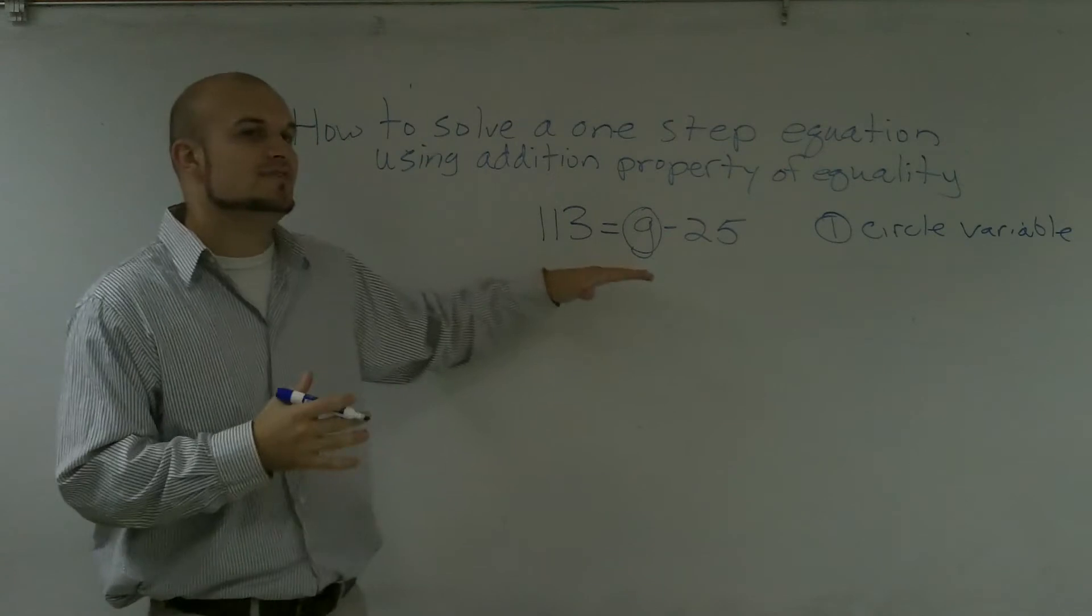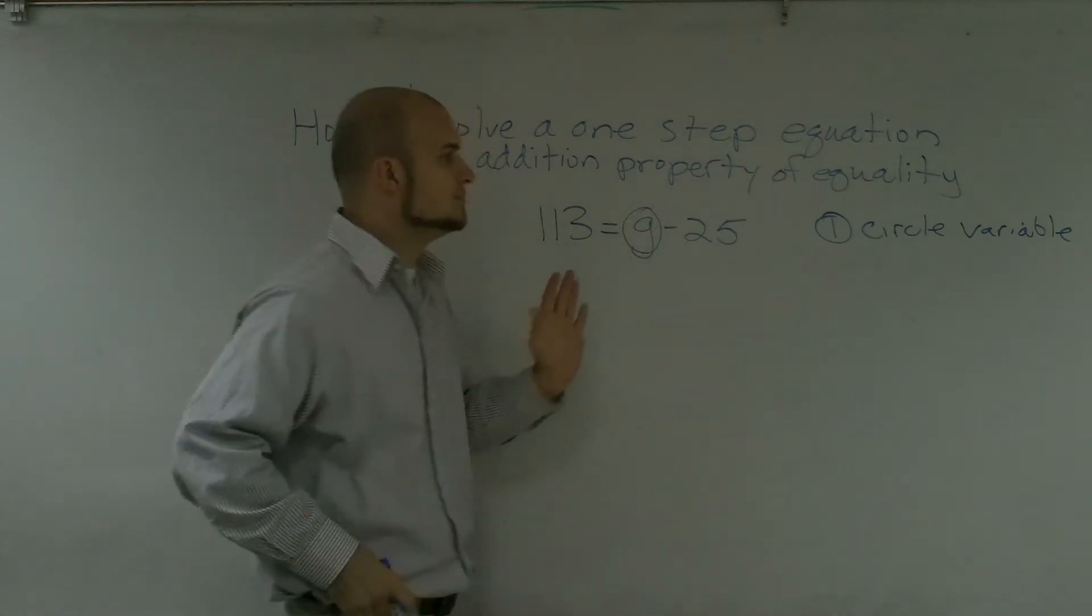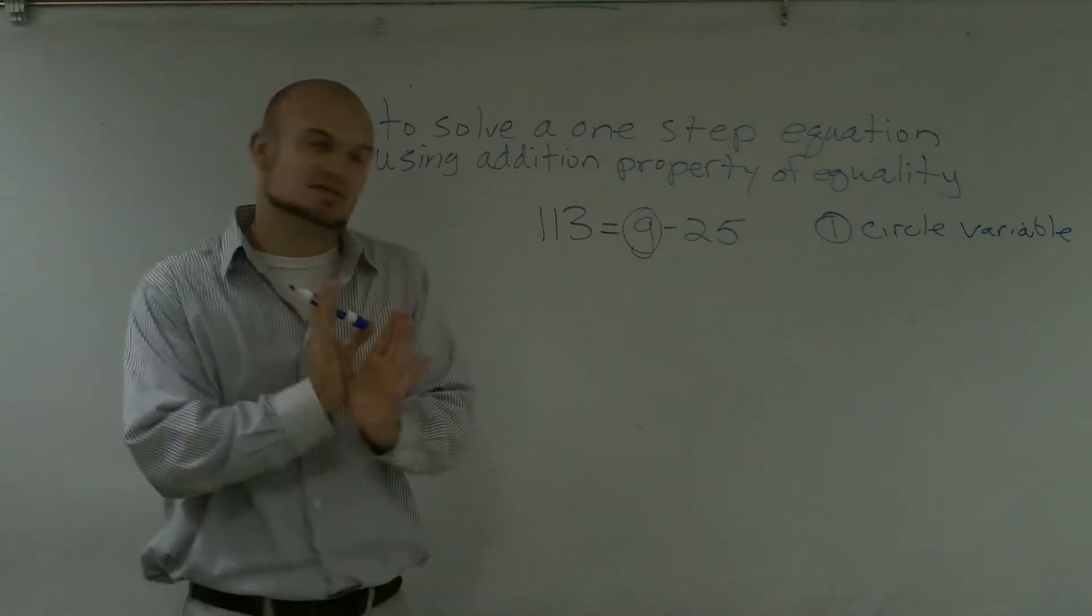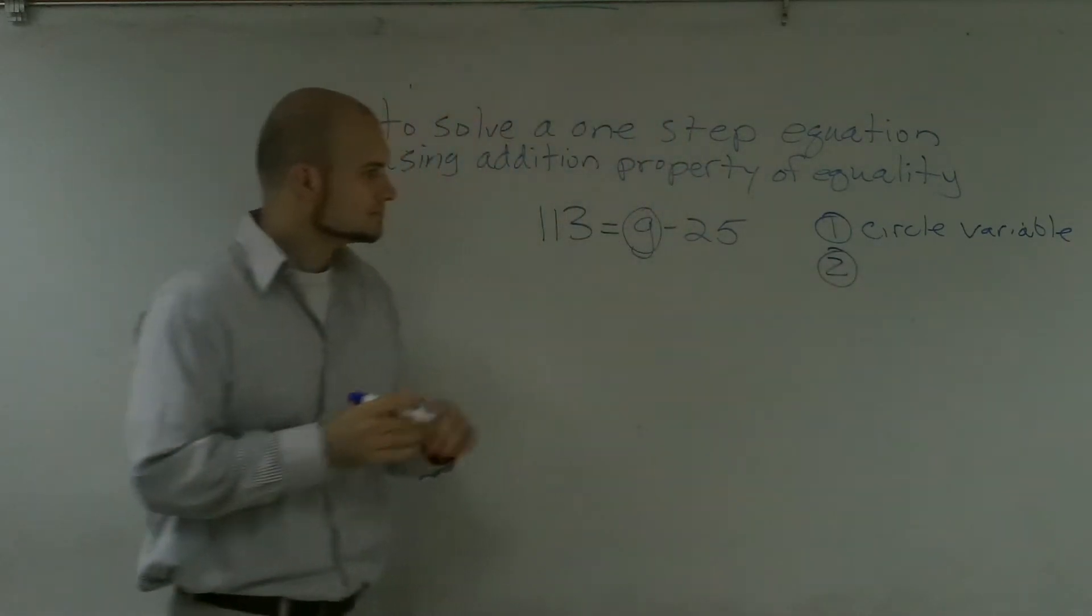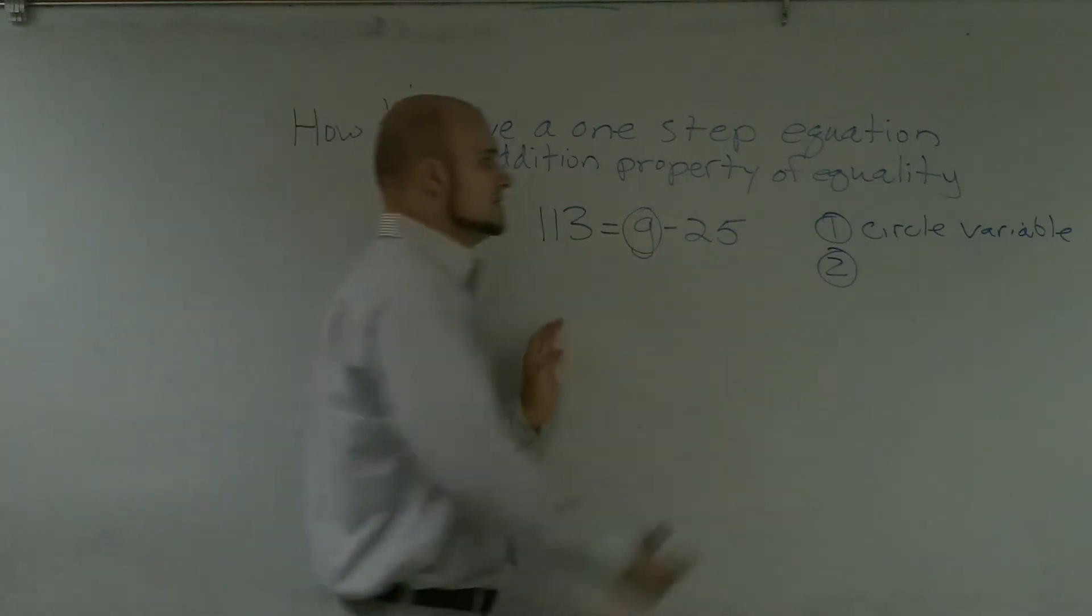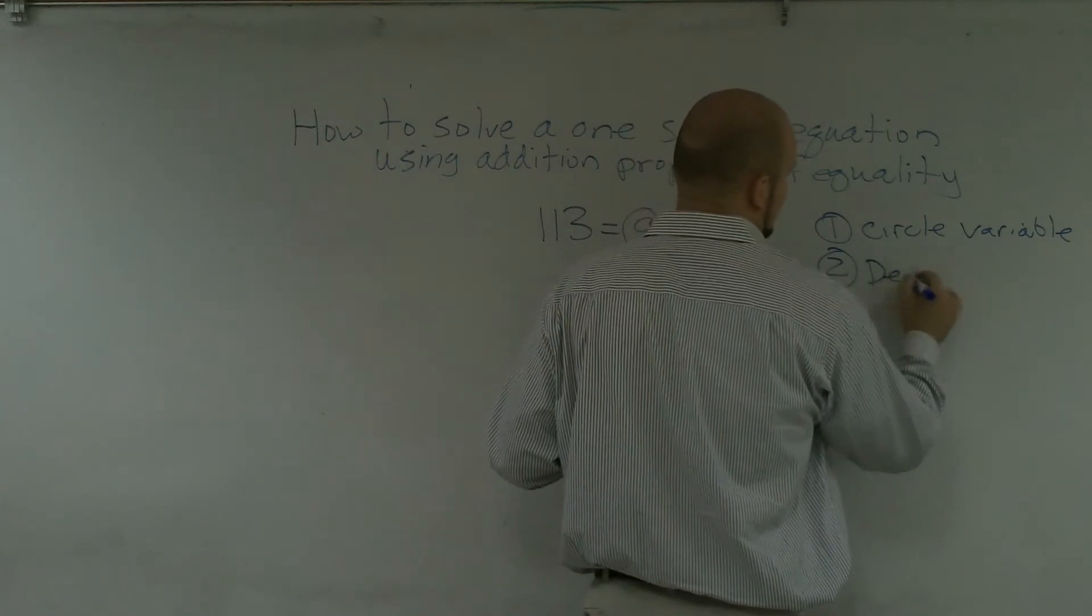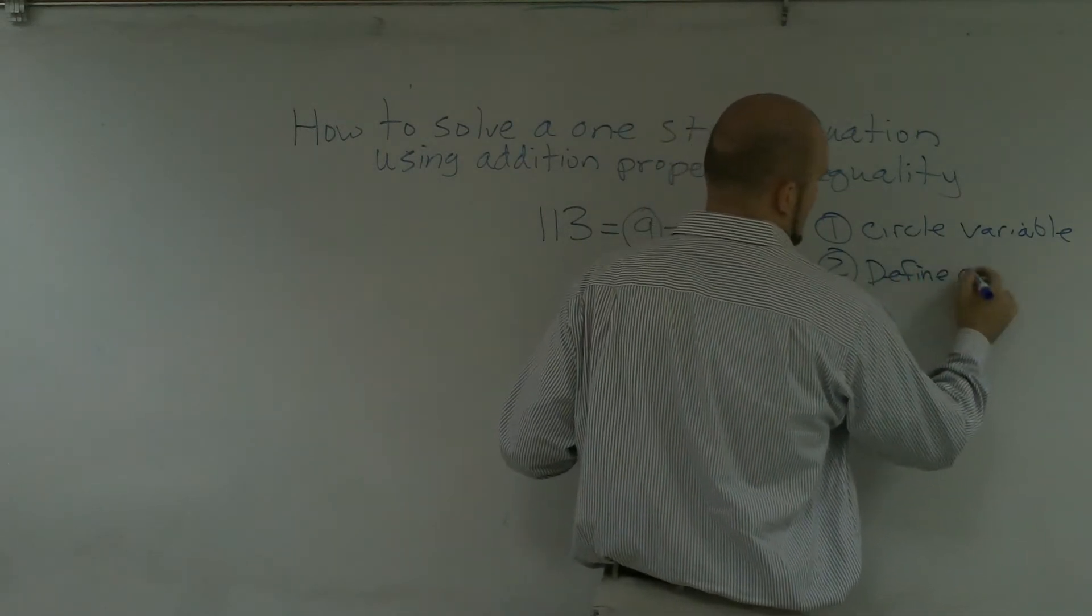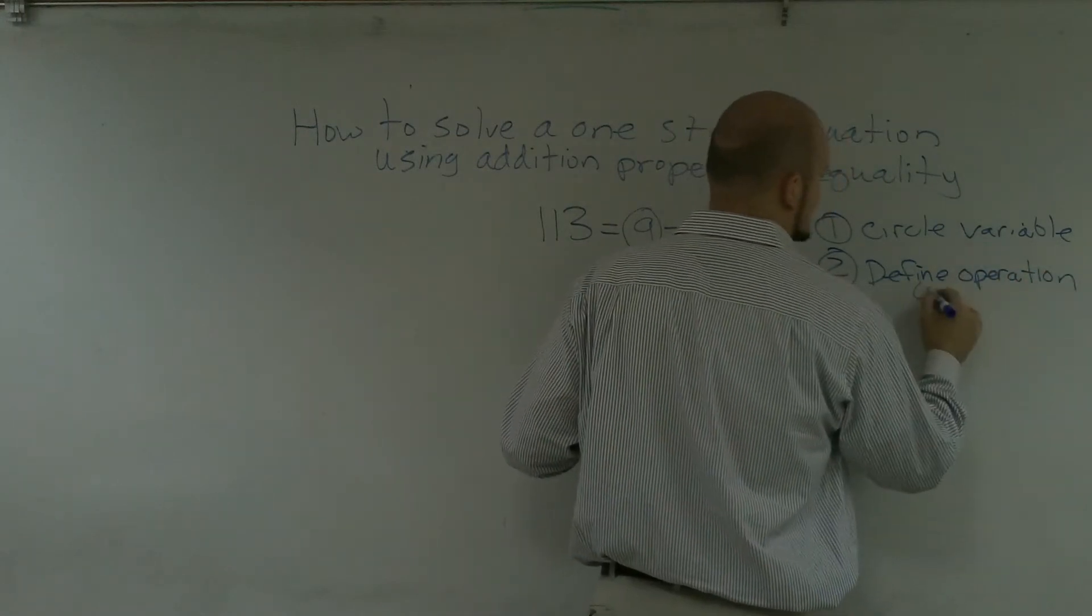Then step two is now we need to figure out what is happening to this variable. Now since this is only a one-step equation, we know there's only one operation that's happening to this variable. So the operation that's happening to the variable is going to be subtraction. We notice that 25 is subtracted from g. So we first circle our variable, and then we need to define the operation, which here is subtraction.